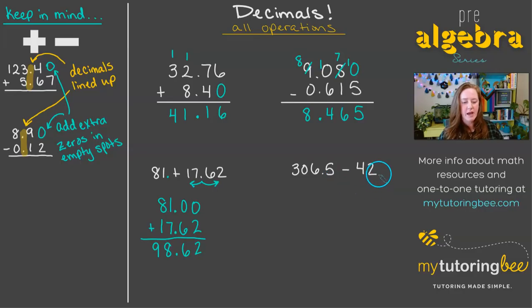With this subtraction problem, we have another whole number that we're subtracting. But we know with whole numbers that that decimal shows up after the ones place. So we can go ahead and write it in there if that's going to help us line things up. So let's go ahead and write out 306.5, and then our 42 would go here in the tens and ones place under the 0 and the 6. And then our decimal, and then I am going to go ahead and put in a 0 there just to fill out that empty spot.